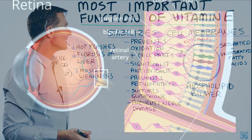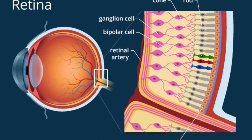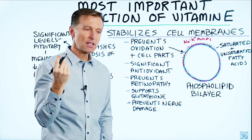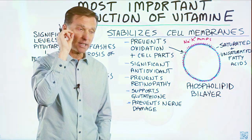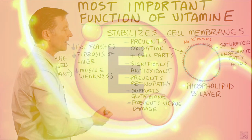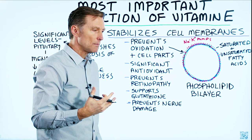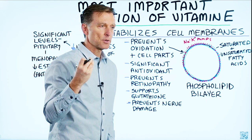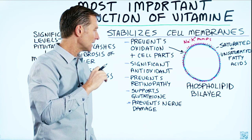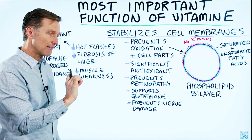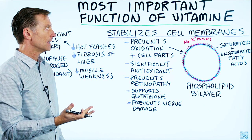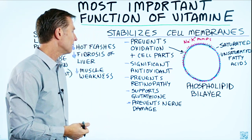Vitamin E prevents retinopathy, which is a disease of your retina — the nerve of the eye, basically an extension of the brain sticking out in the eye. The reason vitamin E prevents this condition is because vitamin E is all about protecting fat-soluble structures. Anything related to nerve has a fat layer called the myelin sheath, and vitamin E is a fat-soluble vitamin.